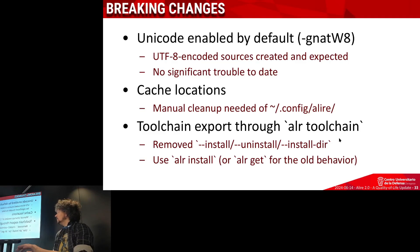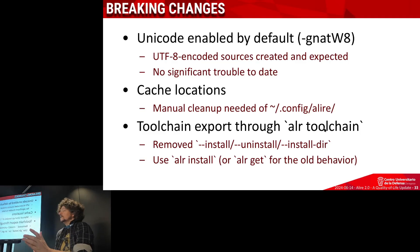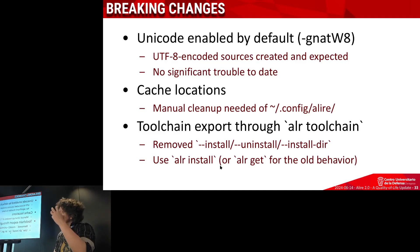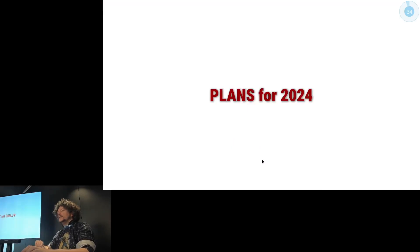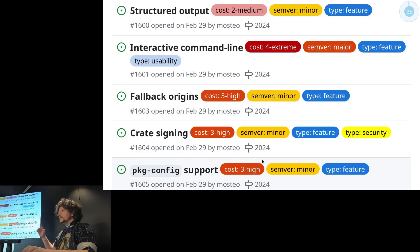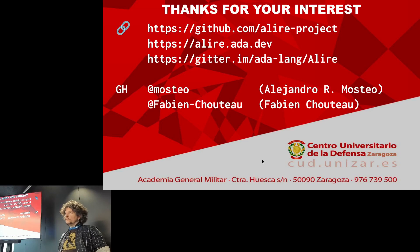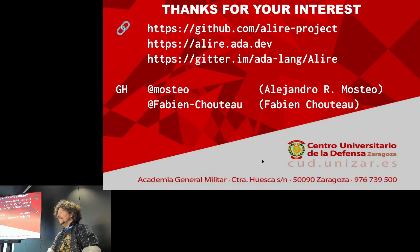Previously you could download compilers to specific locations with 'alr toolchain'; now this should be done with 'alr install', or if you need the structure in the zip file, you can use 'alr get'. I'll skip the remaining details — you can check the repository if you're interested. I hope some of these new features will help you, and for anything that isn't covered, you can always ask. Thank you very much.